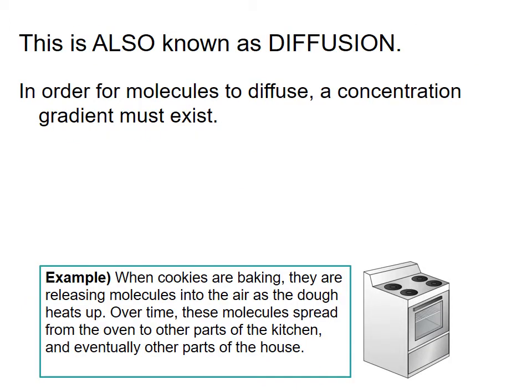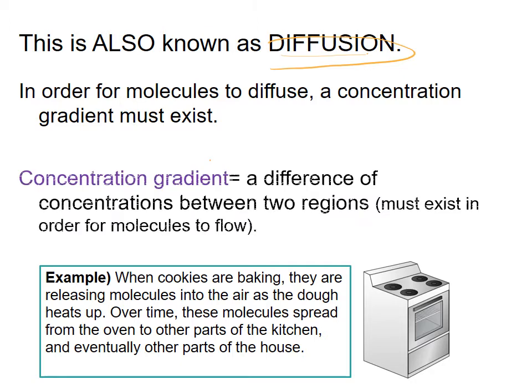This is also known as diffusion. In order for molecules to diffuse, a concentration gradient must exist. A concentration gradient is simply the difference of concentration between two regions, and it must exist in order for the molecules to flow. The concentration gradient goes from high concentration to low concentration. If you're using energy, it'll go from low to high.